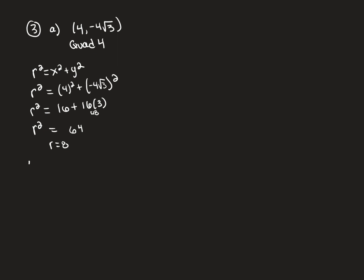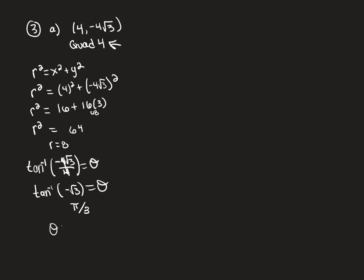For theta, use arctan(y/x) = arctan(−4√3 / 4). The 4s cancel, leaving arctan(−√3). Using the hand trick, arctan(√3) = π/3, but I need to be in the 4th quadrant, so the angle on the π/3 team in quadrant 4 is 5π/3. The answer is (8, 5π/3).